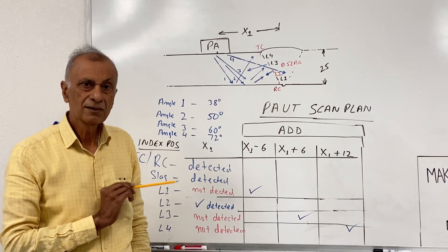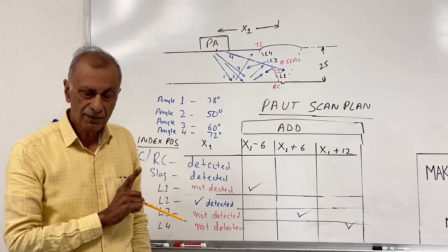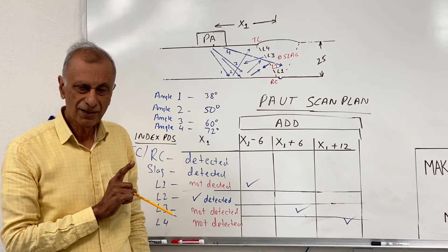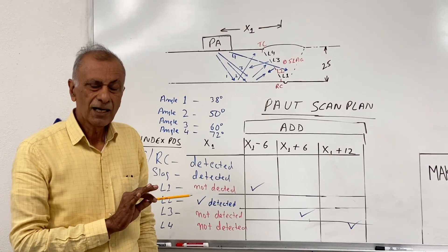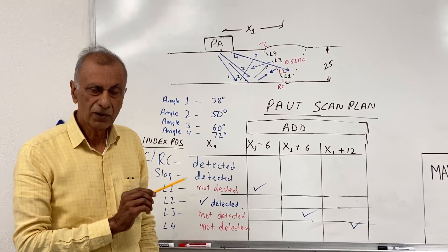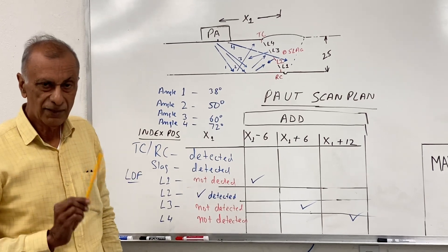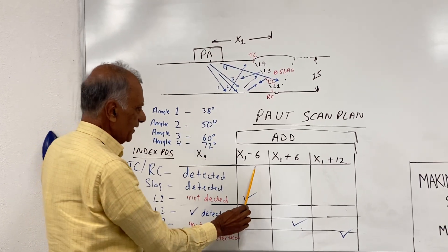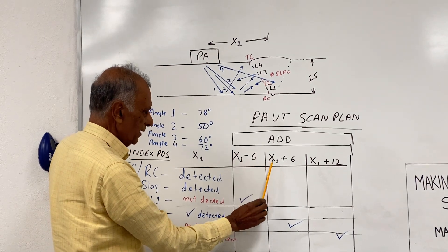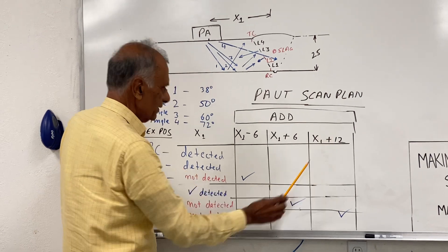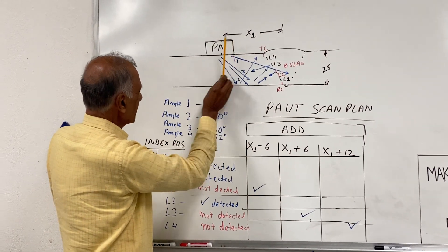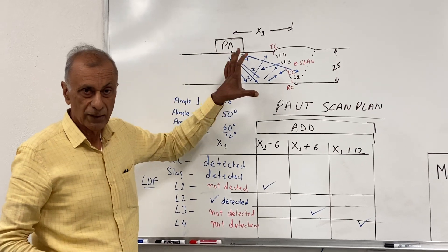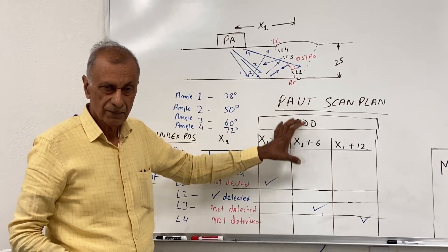The important thing is that if I scan with one index position, even though I may actually illuminate the whole weld, even though I may be showing that I have 100% weld coverage and I'm flooding the whole weld, I'm not getting the sound reflecting back from the lack of fusion flaws. What needs to be done is that you have to take this probe and run it at index position X1, and then run it at index position X1 minus 6mm, X1 plus 6mm, and X1 plus 12mm. You have to run at every 6mm to get full coverage, or a good coverage I would say, of the lack of fusion flaws.